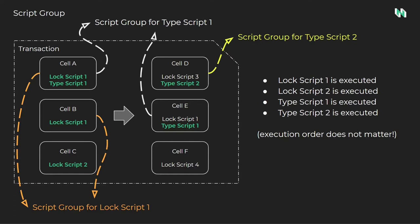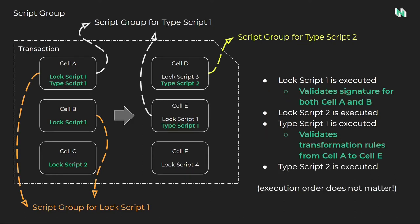Cell F would not be included in any script group because lock scripts do not execute on outputs. In actual usage, when a script is executed, it is responsible for all the cells in the corresponding script group. For example, when LockScript1 is executed, it is responsible for validating the signatures of both cell A and cell B. To do this, it must loop through all of the relevant cells and check the signatures during each iteration.